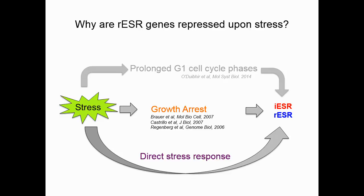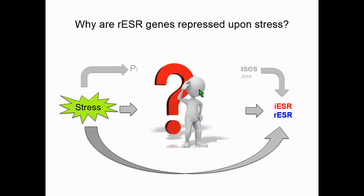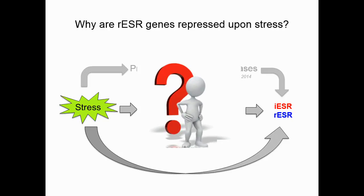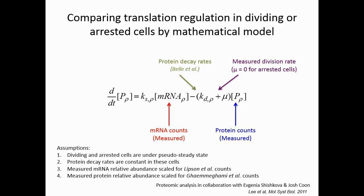So, I have shown that ESR is a direct stress response and have disproved the cell cycle model. The remaining question is: why is there a correlation between growth rate and ESR activation? To reconcile this, I measured proteomic data sets in synchronized and arrested cells along with our transcriptome data, and used a simple mathematical model to compare translation regulation in dividing versus arrested cells.